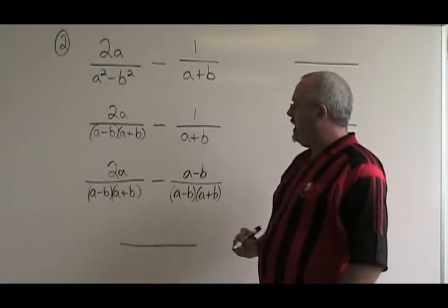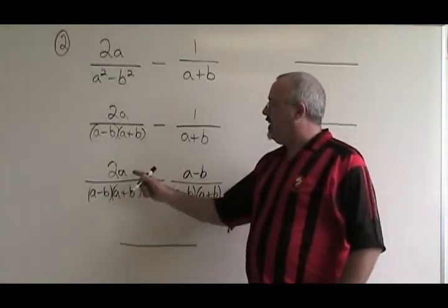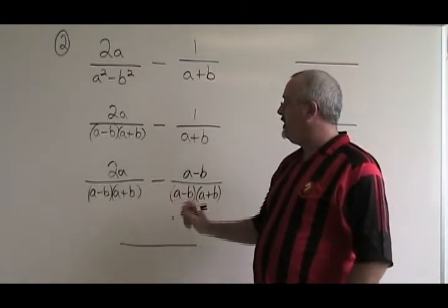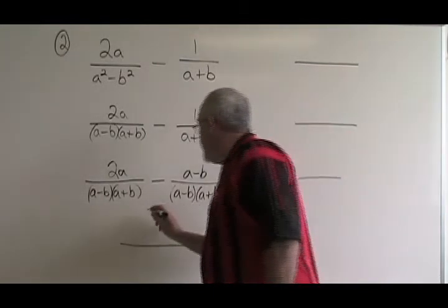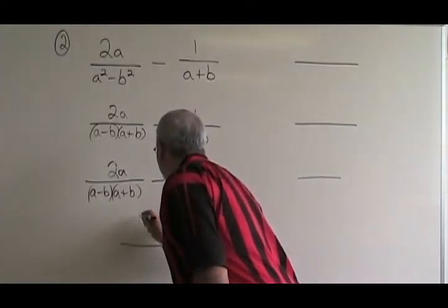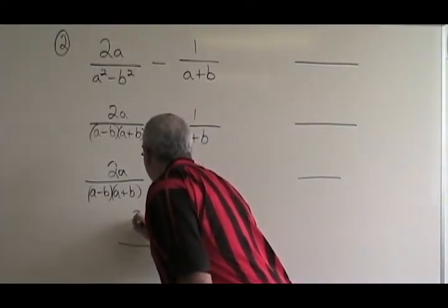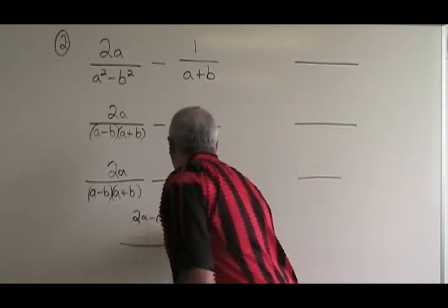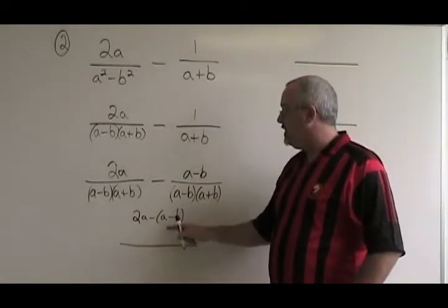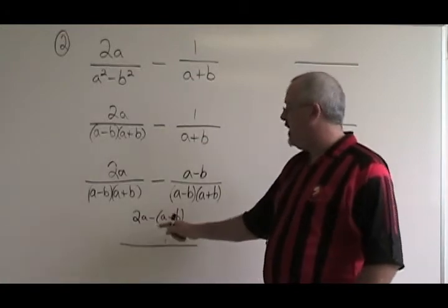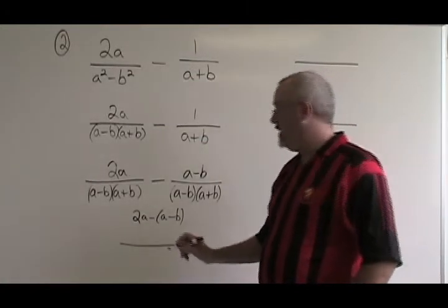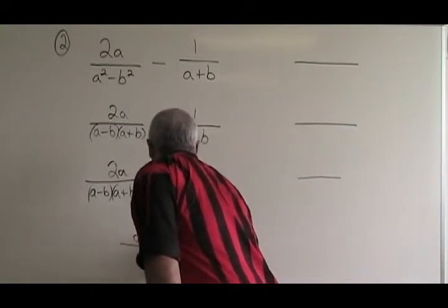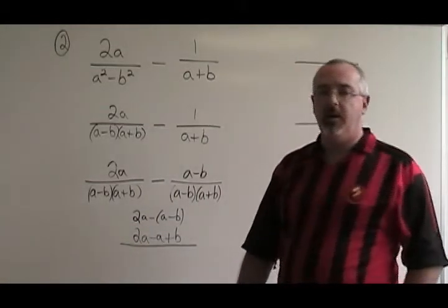Now, at the point where we combine our numerators into a single numerator, we have to be careful because this is a minus sign. 2a minus a minus b looks like this. I use the bracket to show what's happening. This means 2a minus a plus b. The common denominator is still there.